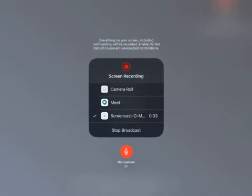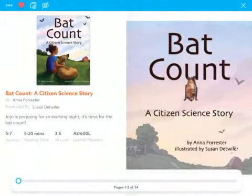Hello everyone, we're here for our next read aloud. Today we are going to be reading this story called Bat Count, A Citizen Science Story. It's by Anna Forrester, illustrated by Susan Detweiler. It's all about this girl named Jojo and she's prepping for an exciting night. It's time for the bat count.